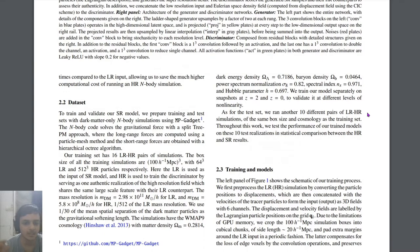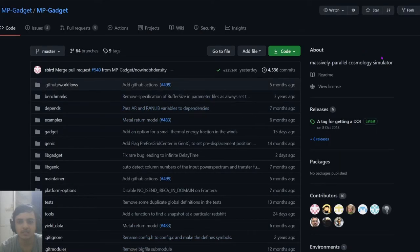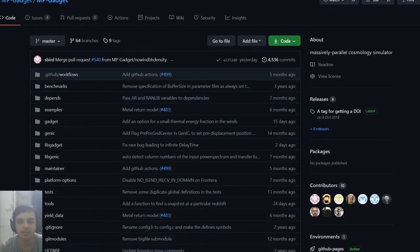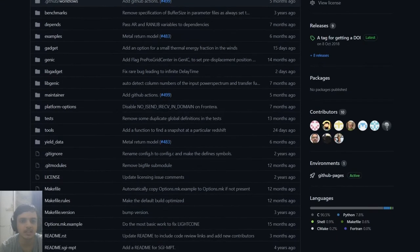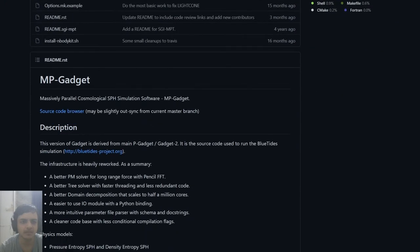The dataset that they used to make this super resolution simulation is the MP Gadget dataset. Let's quickly look over what exactly this is. This is a massively parallel cosmological simulator - a code that many people have used. It's a three year old code.